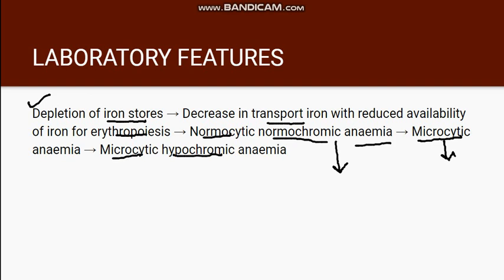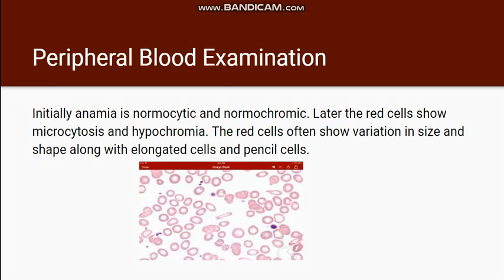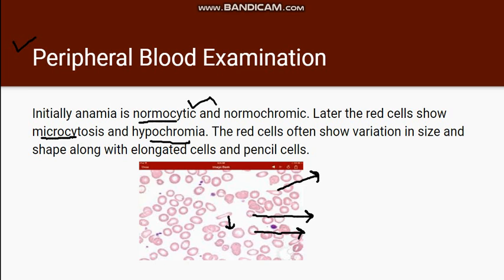Whenever a patient has iron deficiency anemia, we go for CBC — complete blood count — in which we will find hemoglobin is less. In the peripheral blood examination, initially the picture will be normocytic normochromic. However, in later stages there will be microcytosis and hypochromia. We can see a microcytic cell — it is a very small RBC — and also the central pallor has increased, indicating hypochromia. There is also variation in the size and shape of the cells. We can see a pencil cell and a teardrop cell, which are seen in severe iron deficiency anemia.